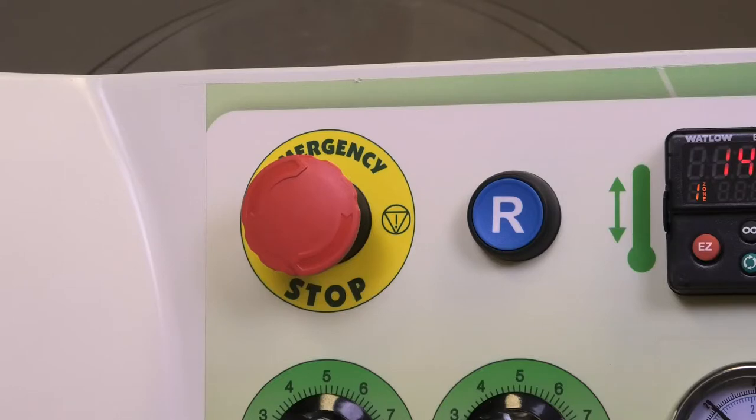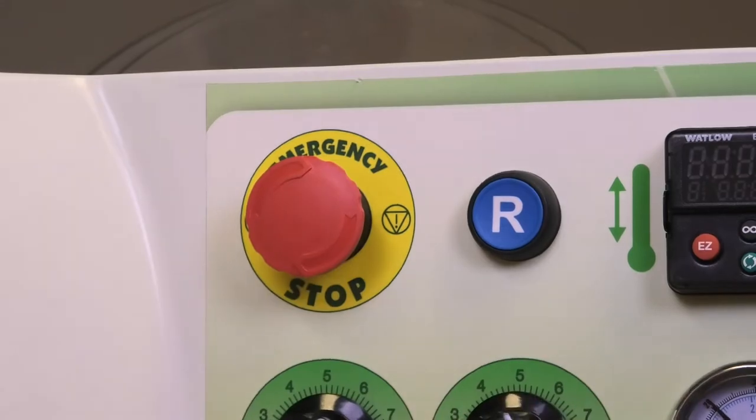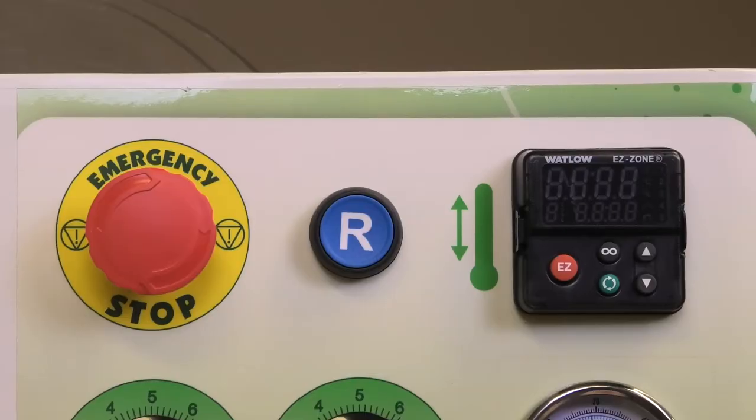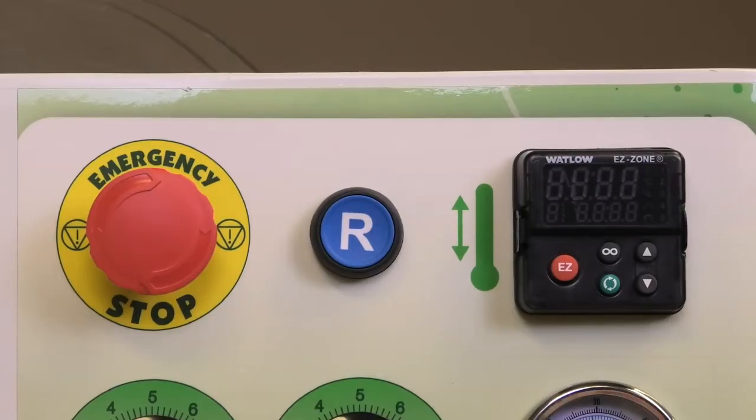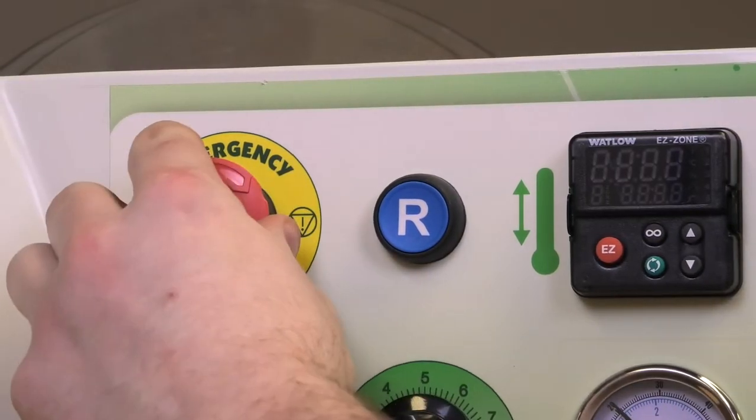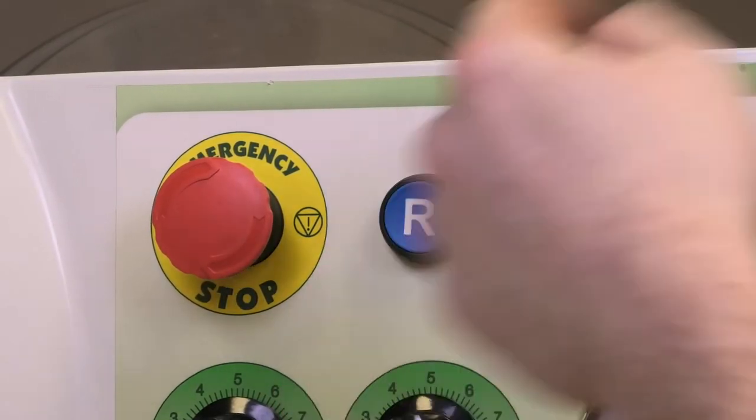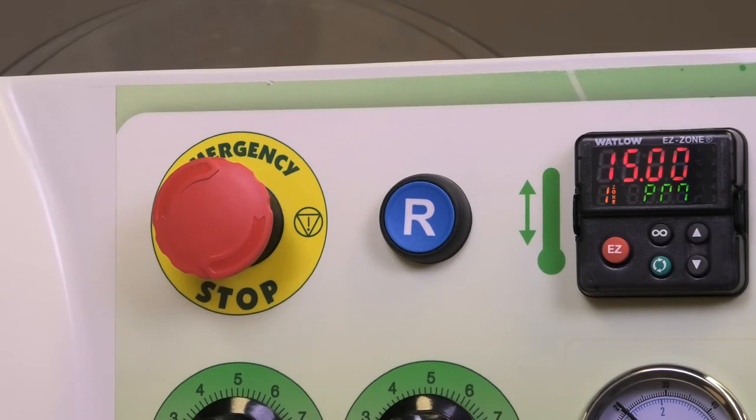Then you can see we have our emergency stop. At any time you feel uncomfortable, just give that a whack and it's going to cut the power to the machine. It's going to completely shut down. When ready to start back up, we're going to give this a little turn. It's going to pop out. Then we're going to hit the reset again. Screen pops on, we're ready to set it back up.